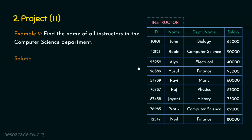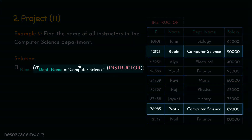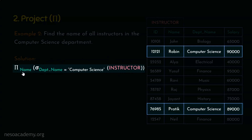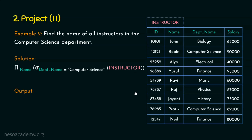From those two tuples, we retrieve only the name attribute. The final output contains only Robin and Pratik, because those are the names of all instructors in the computer science department.